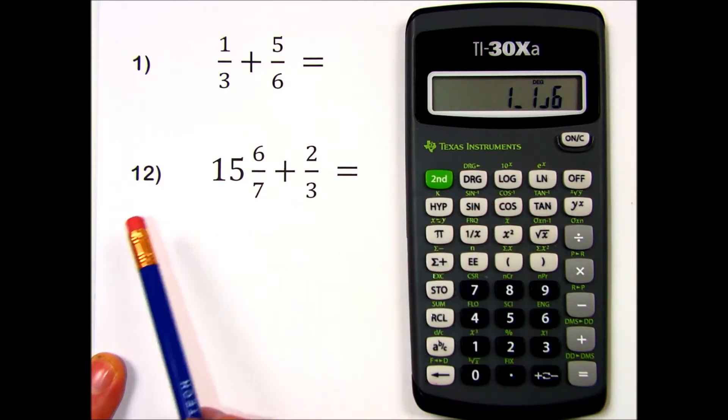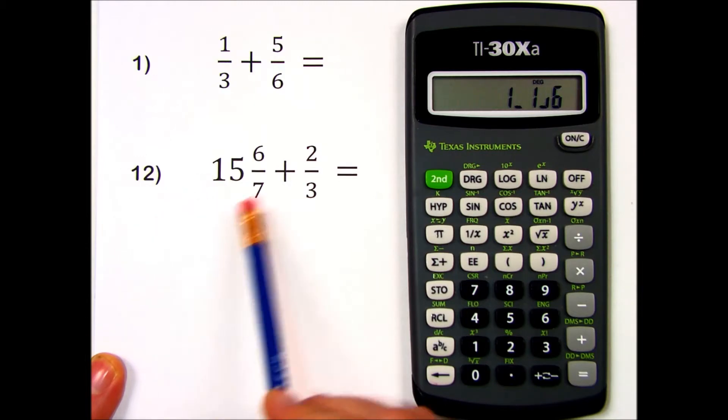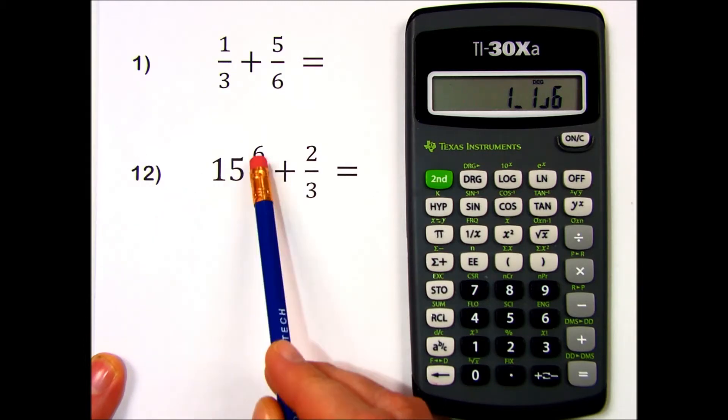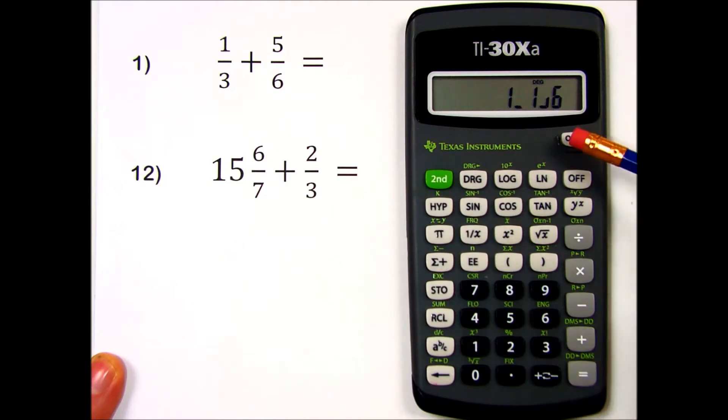Let's try number 12 together. It has a mixed number, 15 and 6/7, plus 2/3. I press 15,